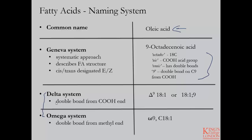In the delta system, the double bond position is counted from the carboxylic end of the fatty acid, with the carboxylic acid carbon being carbon-1. So you have delta-9, or 18:1, or 18:1;9 — these are the naming conventions under the delta system. In the omega naming system, you name the double bond position from the methyl end, and refer to the double bond position as omega — in this case, omega-9, or C18:1.